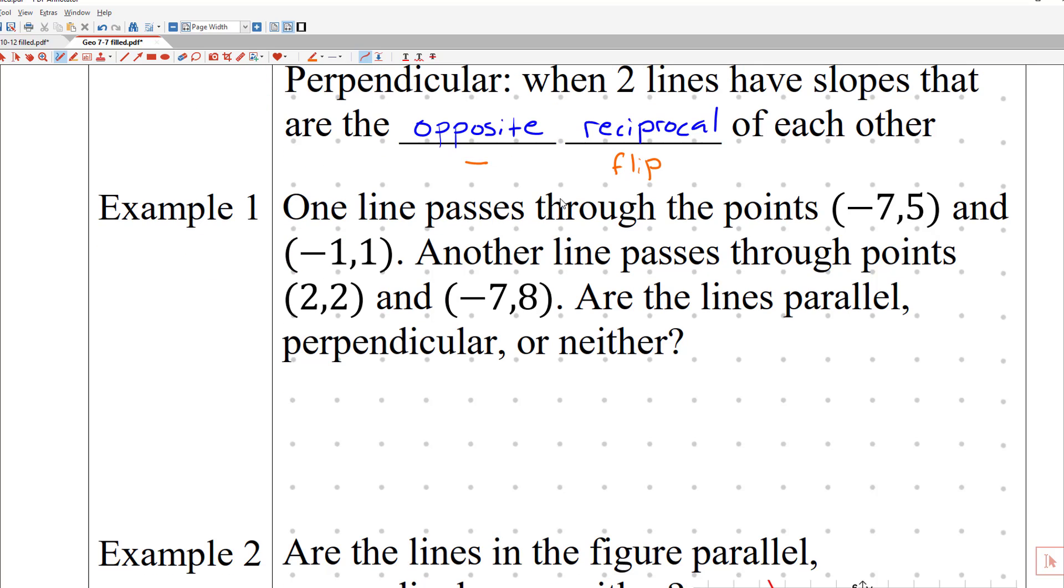Let's do example number one. So our first line passes through (−7,5) and (−1,1). So we'll have to find the slope of that line. And then another line passes through those two points. So how do we solve this? Well, let's find the slope. The slope is just the change in y over the change in x. Some people define it as y2 minus y1 all over x2 minus x1.